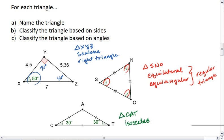Then, looking at angles, we have 30 degrees, 30 degrees, meaning this top angle is 120 degrees, and the triangle is obtuse, because we have that one obtuse angle.